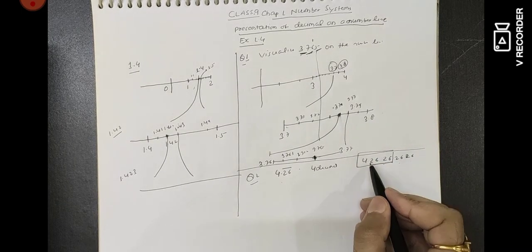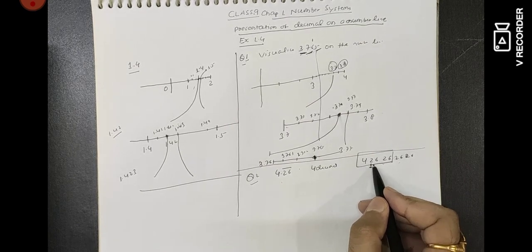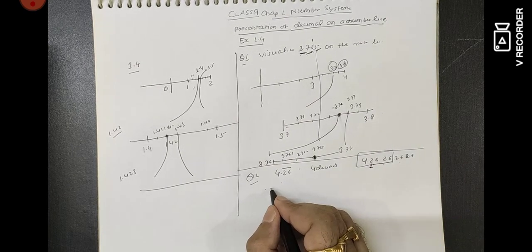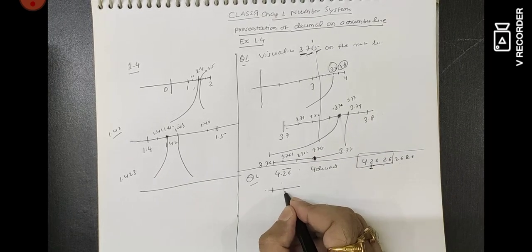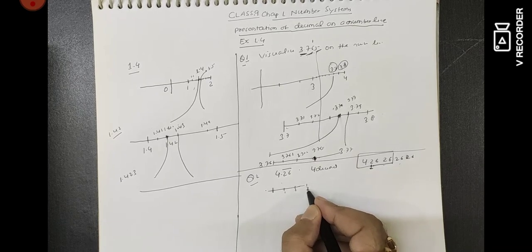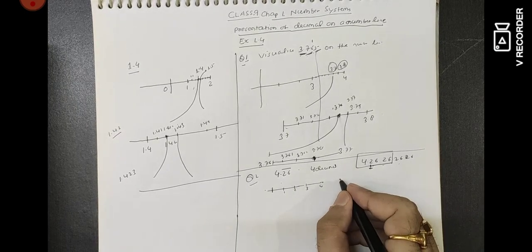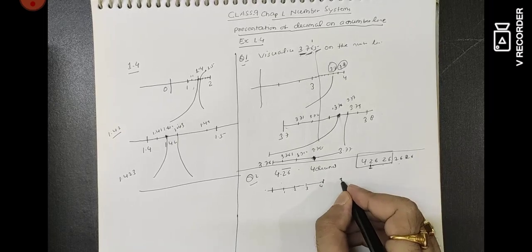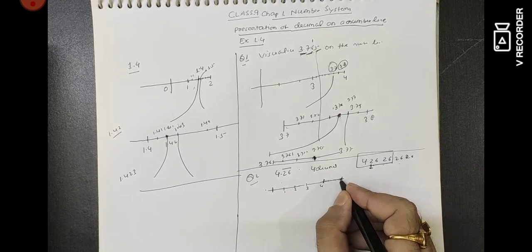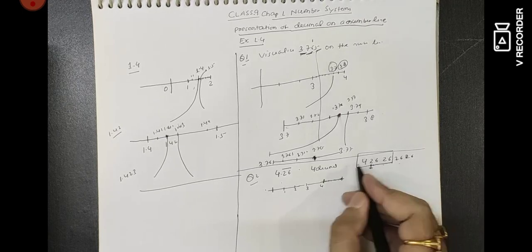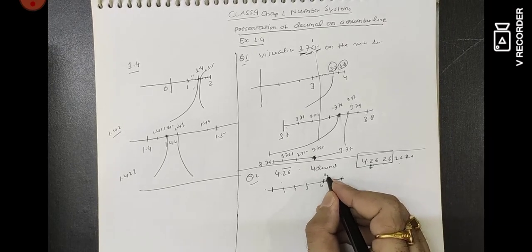For the first decimal step: the number is more than 4 and less than 5. So on the number line, between 4 and 5, you draw 10 parts: 1, 2, 3, 4, 5, 6, 7, 8, 9, 10. You have to take 2, so the first marker is at 4.2.